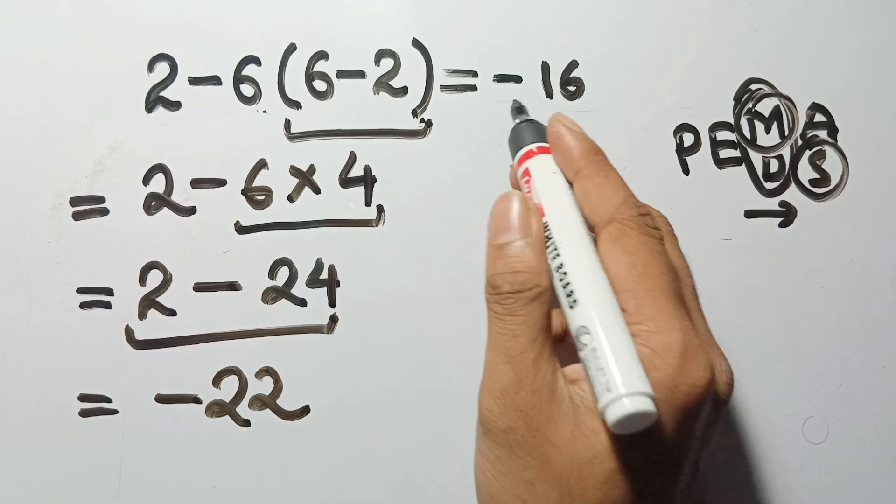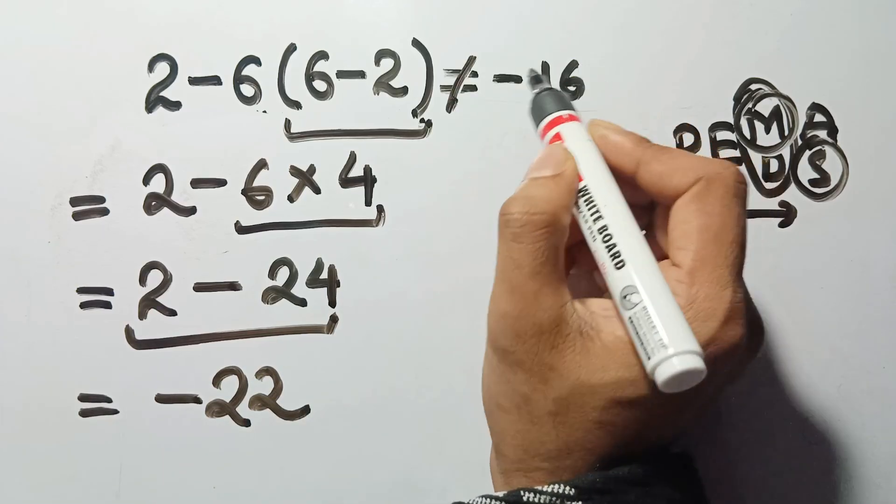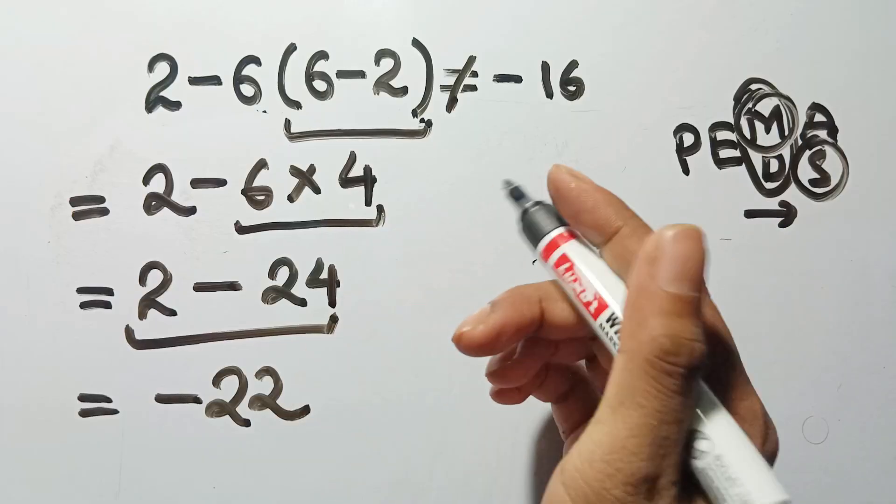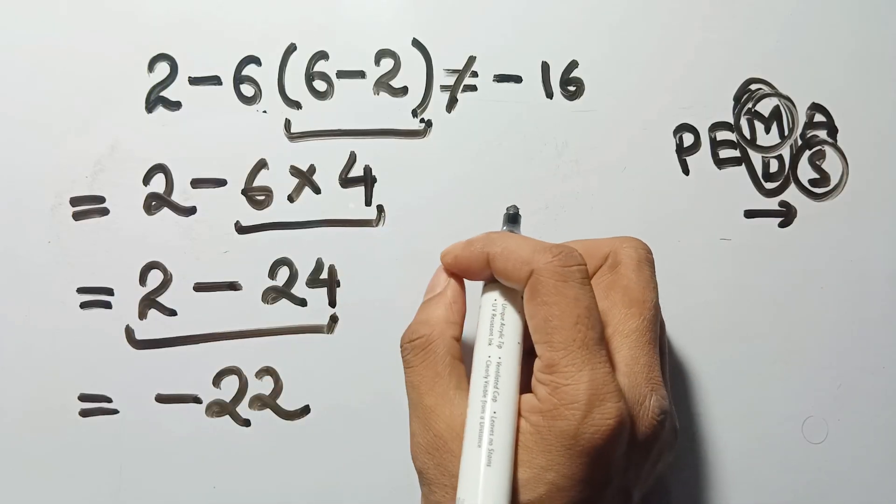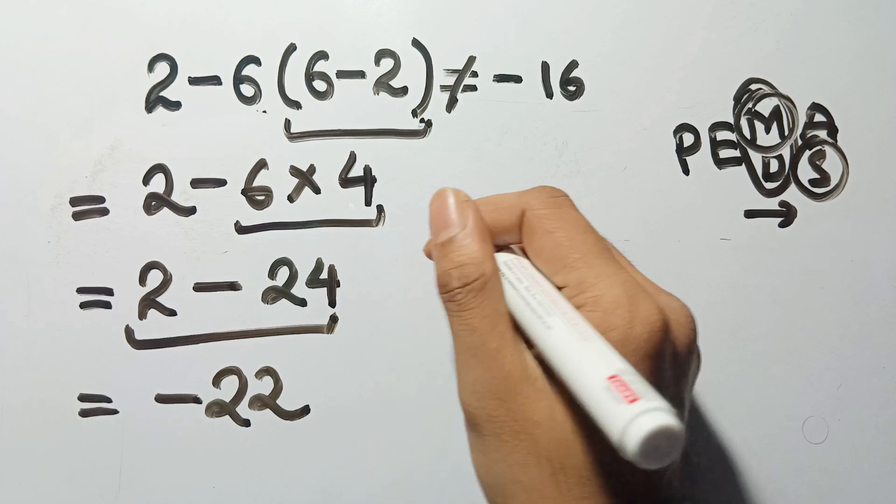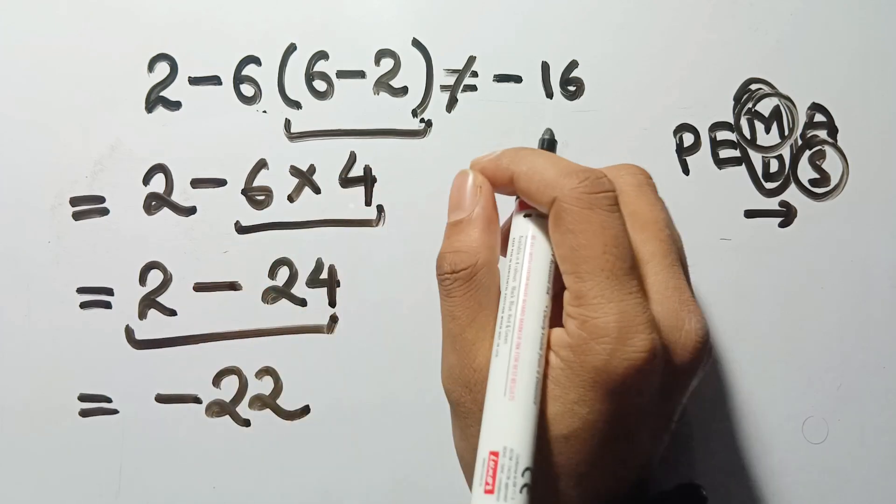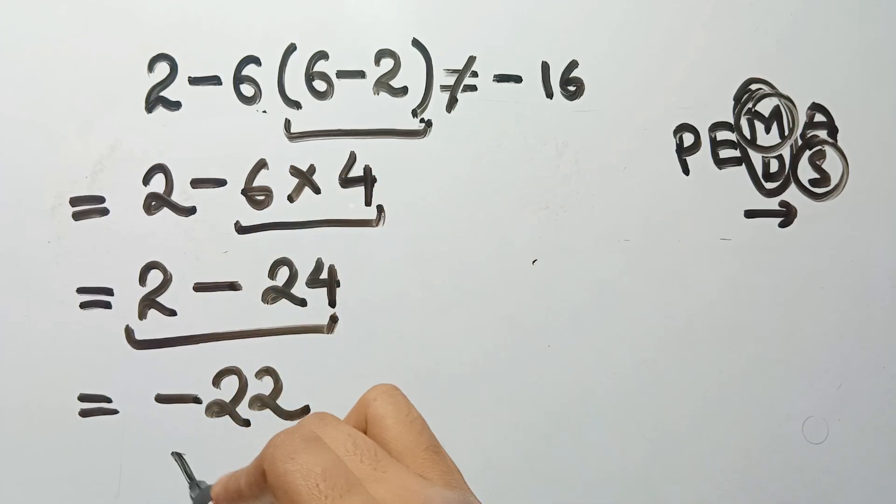See? That's very different from the tempting negative 16 you might have jumped to at first. Before we continue, if you like catching these tricky math moments, go ahead and hit subscribe and like the video. So, the correct answer is negative 22.